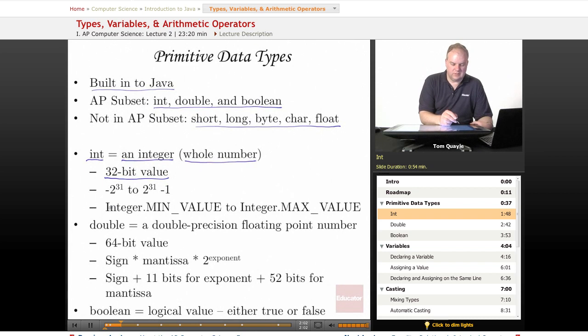That means that the largest possible value that can be stored is 2 to the 31st power minus 1, and the largest negative value that can be stored would be negative 2 to the 31st.